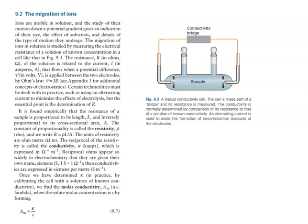Ions are mobile in solution, and the study of their motion down a potential gradient gives an indication of their size, the effect of solvation, and the type of motion they undergo. The migration of ions is studied by measuring the electrical resistance of a solution in a cell. The resistance R in ohms is related to the current I in amperes when a potential difference V in volts is applied: by Ohm's law, V = IR.